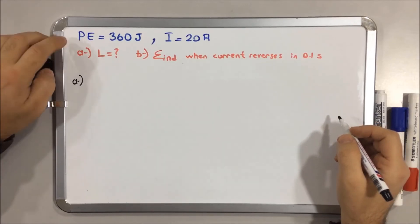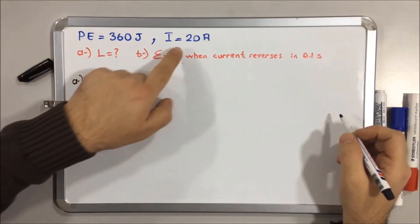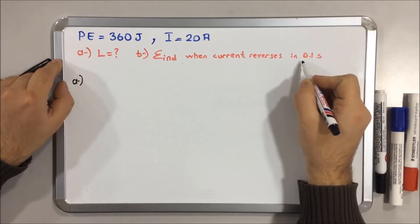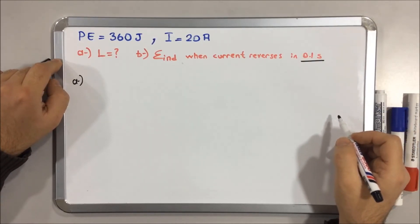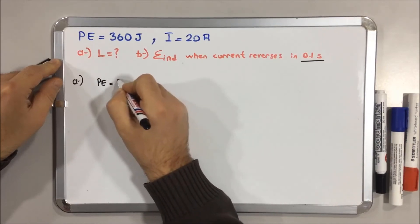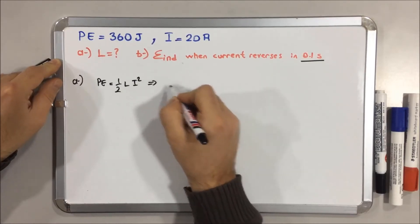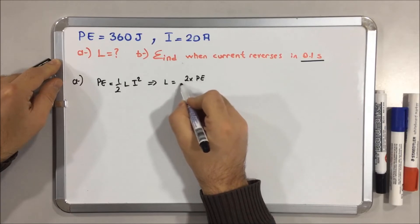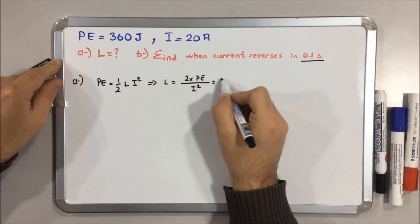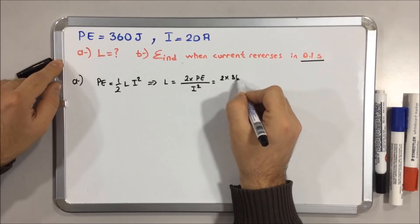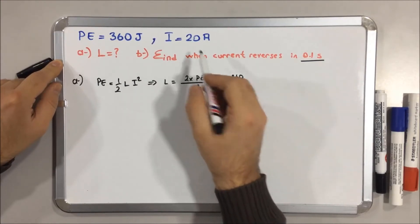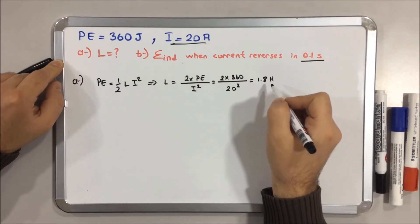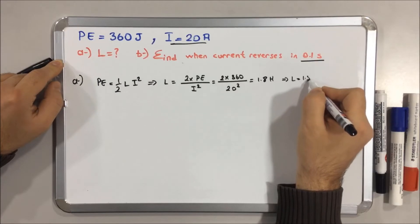Hello, welcome everyone. The given stored energy is 360 J and current is 20 A. Part A says calculate L. Part B says calculate the EMF induced when the current reverses in 0.1 seconds. For part A, the formula is: potential energy equals 0.5 times L times I squared, so L equals 2 times potential energy over I squared, which gives 2 times 360 over 20 squared, and the result is 1.8 H.